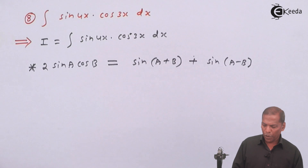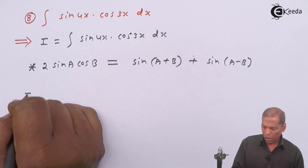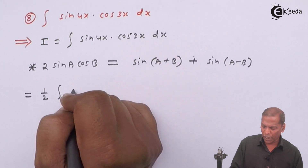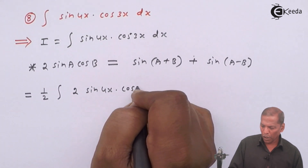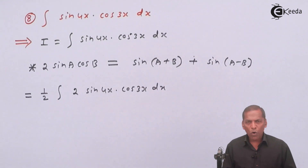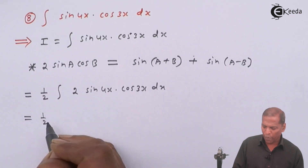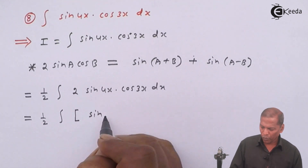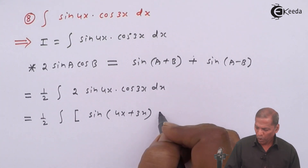To apply this formula, we need a factor of 2 initially. So here we divide by 2 outside the integral, and then integrate 2·sin(4x)·cos(3x) dx. Now by applying the above defactorization formula, the next step will be: (1/2) integral of [sin(4x + 3x) + sin(4x − 3x)] dx.